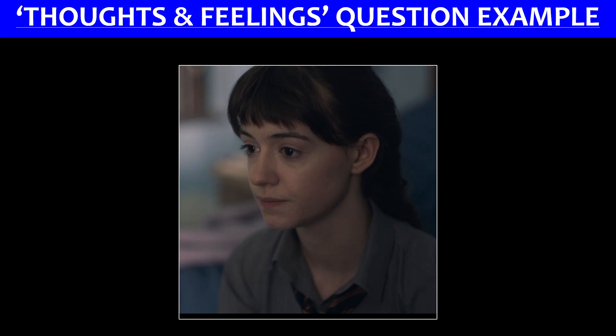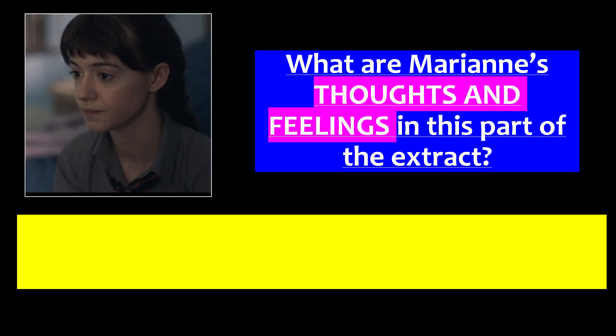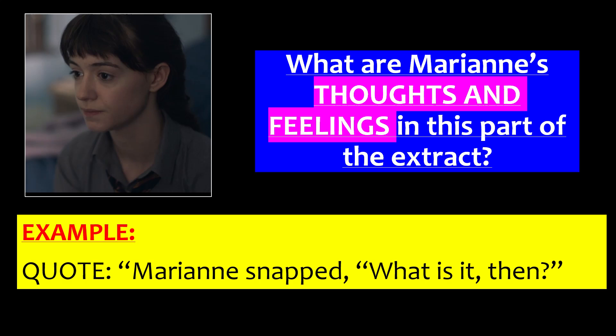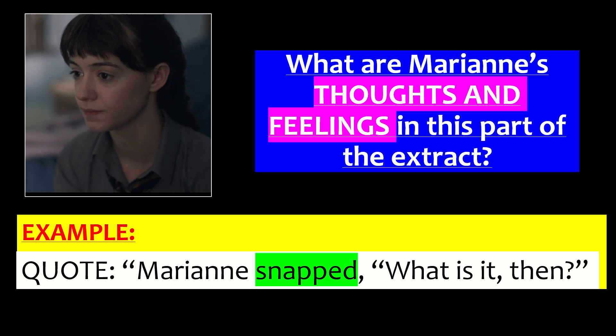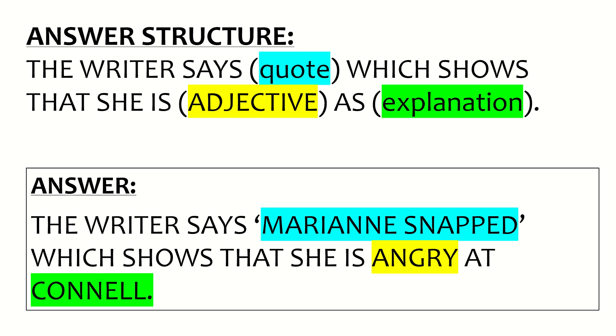They might also include a thoughts and feelings question. For example, Marianne is a teenage girl — the question is 'what are Marianne's thoughts and feelings?' The quote is 'Marianne snapped, what is it then?' If the writer had used 'said' or 'replied' we wouldn't get much, but they chose 'snapped.' Answer: 'The writer says Marianne snapped — this shows she's angry at Connell.' At the top of the page is your answer structure for this question.